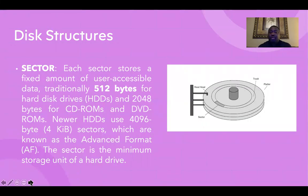The sector stores a fixed amount of user-accessible data, usually around 512 bytes for a hard disk drive, and 2,048 bytes for CD-ROMs and DVD-ROMs. Newer drives use 4,096 bytes, which are known as Advanced Format, or AF. The sector is the minimum storage unit of the hard drive. You can see this is the sector right here.